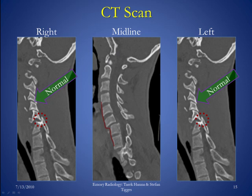Here we have a CT scan from a much younger patient with a similar injury. On the midline sagittal CT image, there is marked anterior displacement of C6 with respect to C7 at both the anterior and posterior cortex, suggesting disruption of both the anterior and posterior longitudinal ligaments. Posteriorly, there is distraction of the posterior elements at this level. On left and right parasagittal images, normal facet joints line up like shingles on a roof, while at the C6-C7 level, facet dislocations are present on both sides, indicated by the red dots.